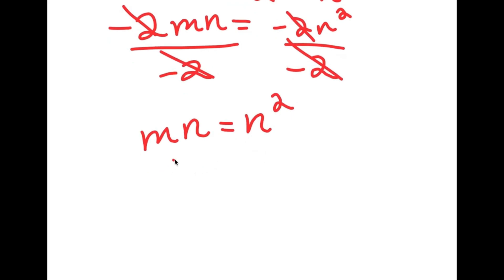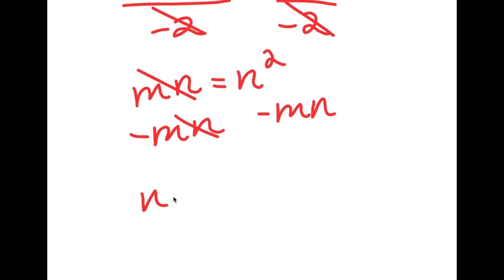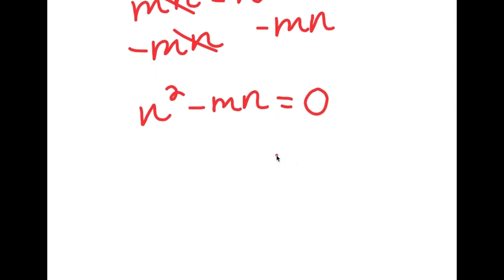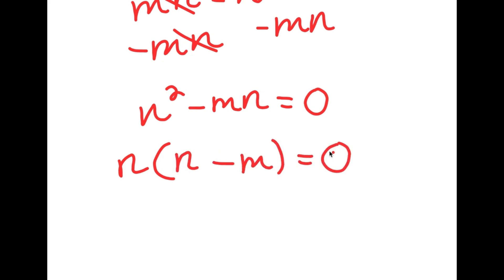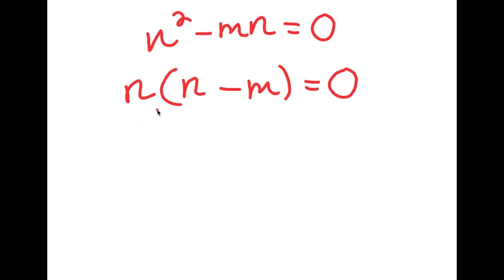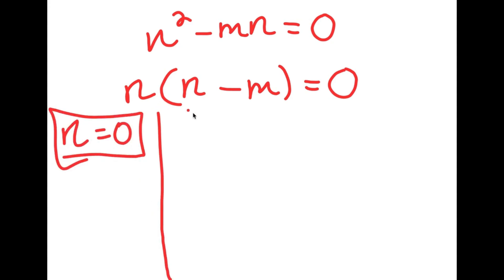From here, I'm going to subtract mn on both sides so those cancel out, giving me n squared minus mn is equal to 0. The greatest common factor in n squared minus mn is n, so if I factor out n, I get n times (n minus m) is equal to 0. This gives me two equations: n equals 0, and n minus m equals 0.